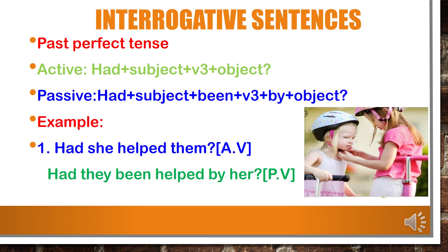Past perfect tense — for all subjects use 'had'. In active voice: had plus subject plus V3 plus object. In passive voice: had plus subject plus been plus V3 plus by plus object. Example — in active voice: 'Had she helped them?' In passive voice: 'Had they been helped by her?' — 'had' stays as it is. 'Them' in active voice changes to 'they' as the subject in passive voice. 'Been' is written as it is. 'Help' changes to 'helped' (V3). 'She' changes to 'her' as a pronoun in passive voice.